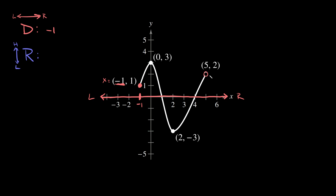For the point at 5, 2, using the x-axis we can see it's at x equals positive 5 — that's the point furthest to the right. So we go from negative 1 to positive 5. To write this in interval notation, we need to figure out whether to use parentheses or brackets. When you have a closed circle you use a bracket, and when you have an open circle you use a parenthesis.